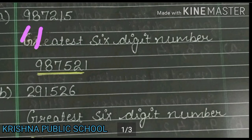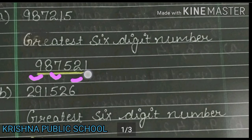So the greatest 6-digit number formed will be 9,87,521.